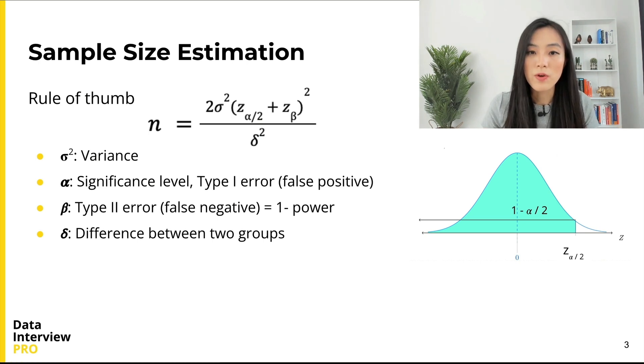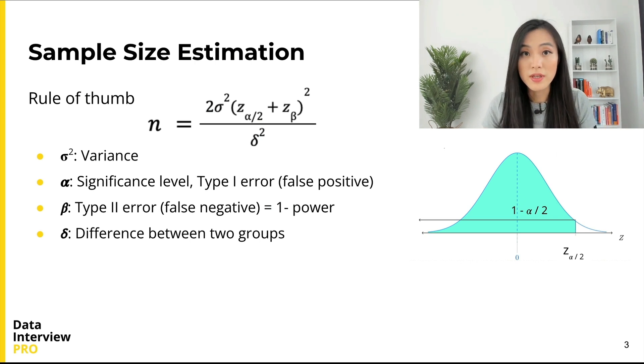z_β is a z-score such that the area to the right of z_β is β under the standard normal curve. δ is the difference between control and treatment. So this is the general form of sample size estimation.